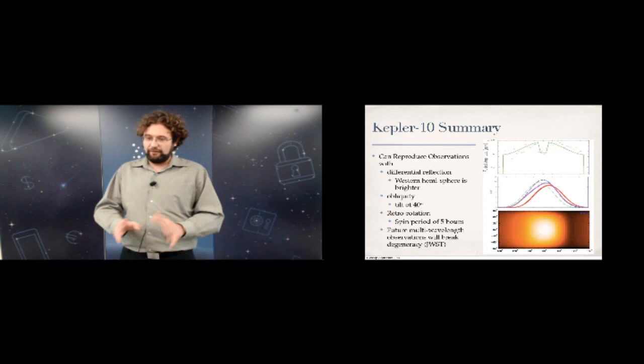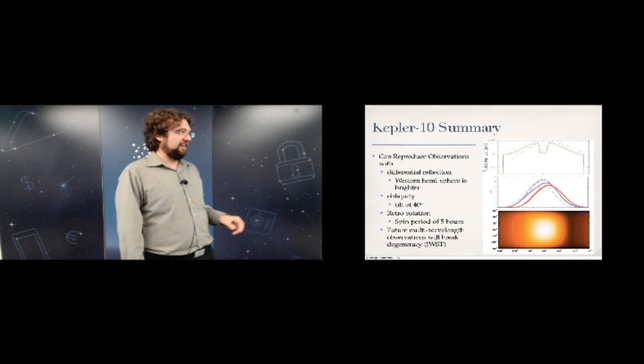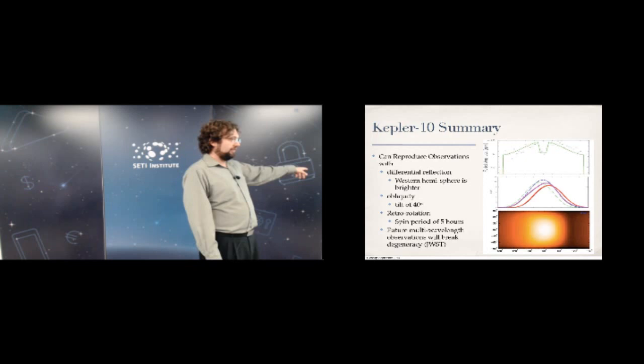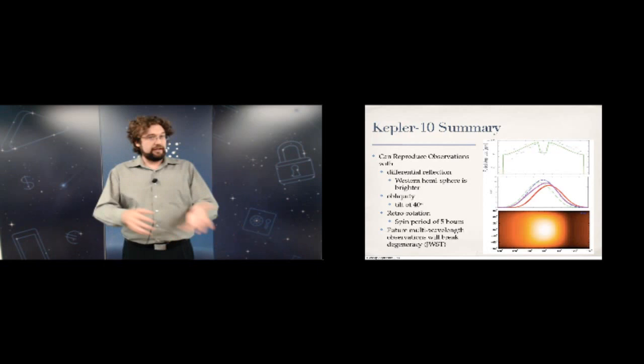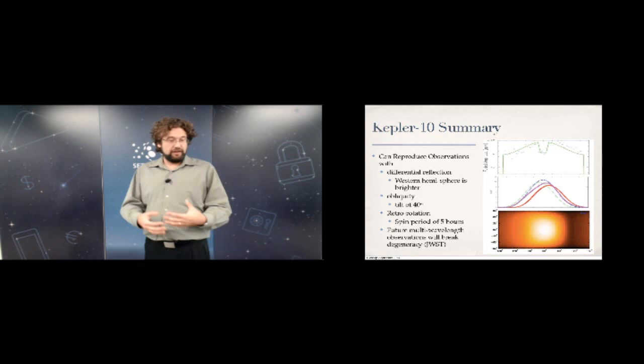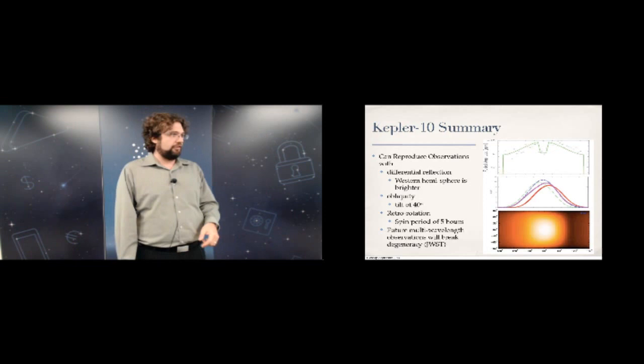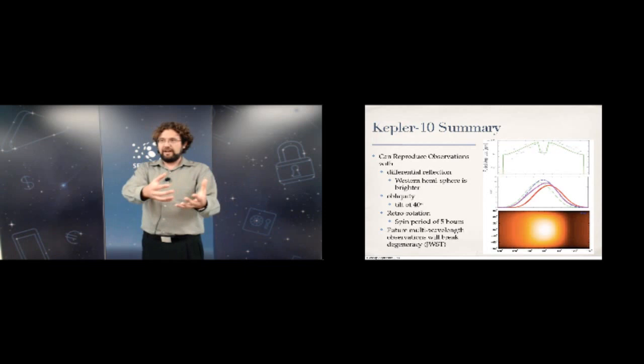I enjoy playing with obliquity and retrograde rotation models because in the future JWST — an infrared instrument — will allow us to tell the difference between emission and reflectivity. If I see the asymmetry in the infrared, then these retrograde rotation and obliquity models become important because I have to explain how to transport emission from the day side toward the night side in a specific direction.